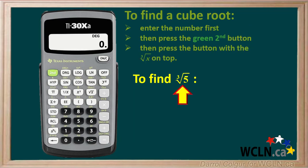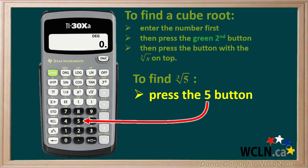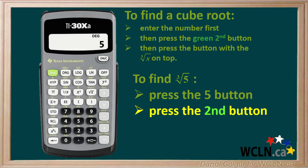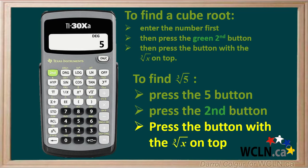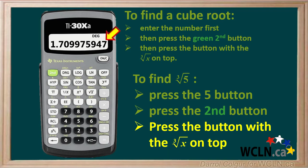For example, let's say you want to find the cube root of 5. First, enter the 5 by pressing the 5 button. The cube root on this calculator is a second function, so you must press the green second button first. Then press the button with the cube root of x on top, which is the zero button. The display now reads the approximate cube root of 5 to 9 decimal places.